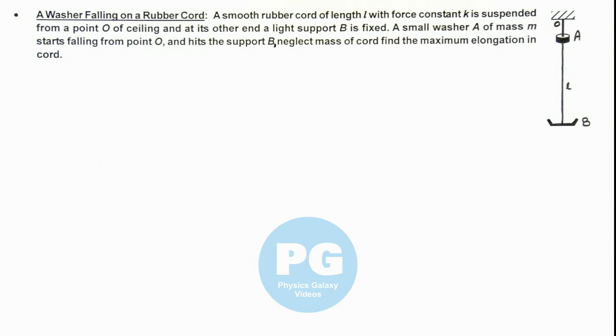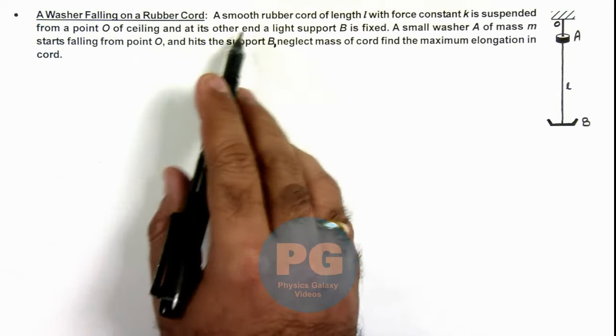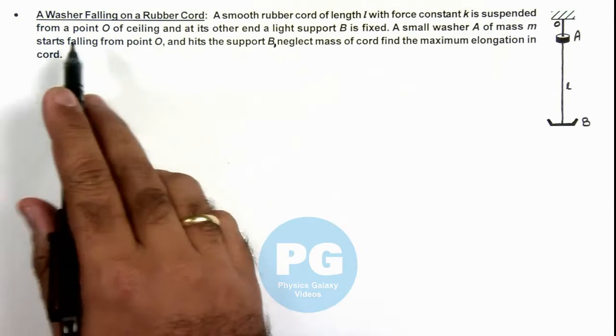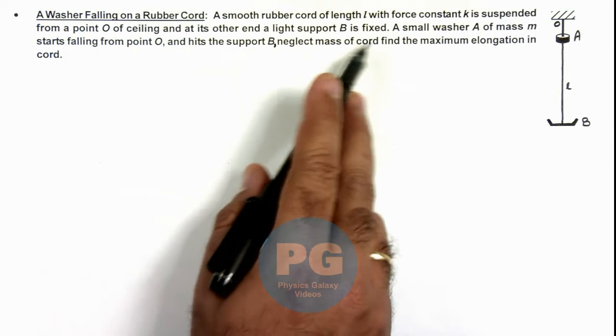In this illustration we'll discuss about a washer falling on a rubber cord. We are given that a smooth rubber cord of length l with force constant k is suspended from a point O of ceiling, and at its other end a light support B is fixed.